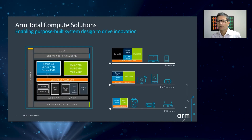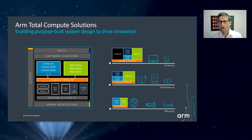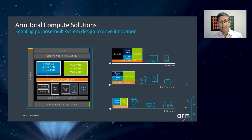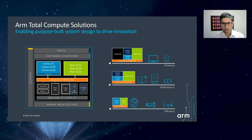ARM's Total Compute solutions take a cross-IP, system-wide optimization approach to address these challenges. These optimizations span across the solution components that include ARM's hardware IP, physical IP, software, tools, and standards. In this presentation, I will provide an overview of some of the optimizations like gaming optimizations, AI performance enhancements, and new security capabilities in our first generation of Total Compute solutions.